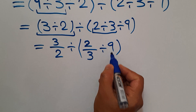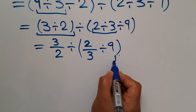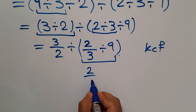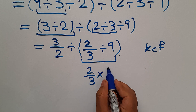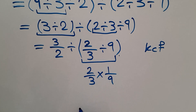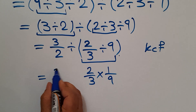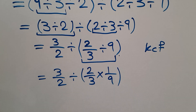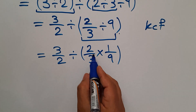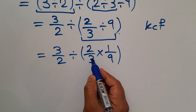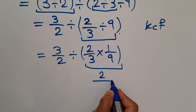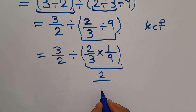2 over 3 divided by 9, according to the KCF rule, can be written as 2 over 3 times 1 over 9. So we have 3 over 2 divided by this parentheses result. 2 over 3 times 1 over 9 equals 2 over 27.